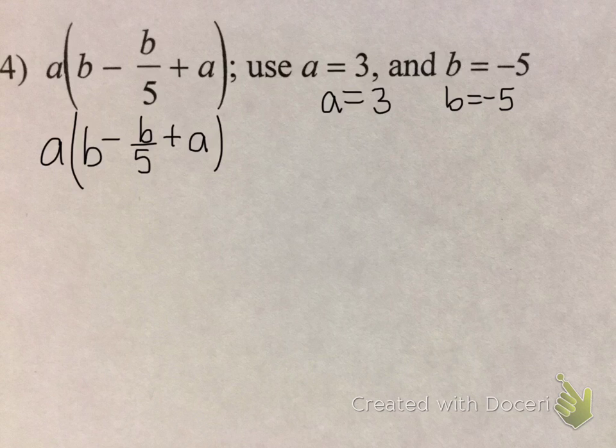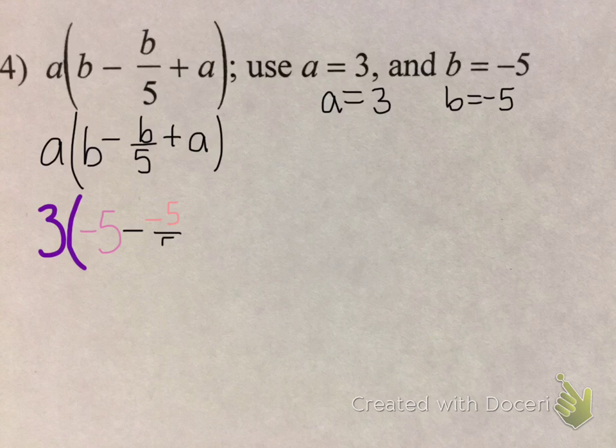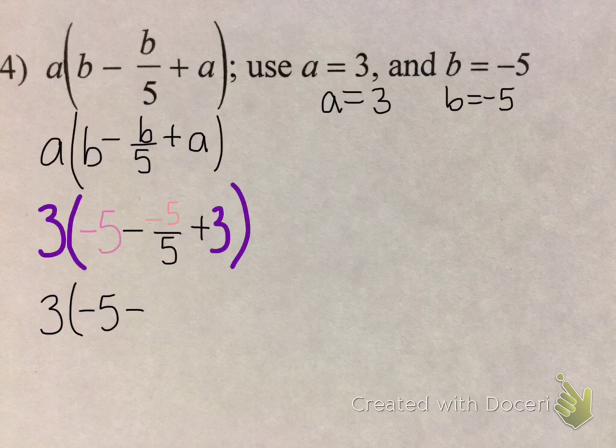For our last example today to put in with our notes, we have a times the quantity b minus b over 5 plus a, when a equals 3 and b equals negative 5. So again, wherever you see an a, you're going to plug in the 3 value, and wherever you see the b, you're going to plug in negative 5. So I showed this in color this time so that it helps show it as well. But I do recommend parentheses—I think that helps keep everything clear. Now that my negative 5 and my positive 3's are in there, let's see what we can do to reduce this. So this is 3 times negative 5 minus, now this negative 5 over 5, that's just negative 1 plus 3.